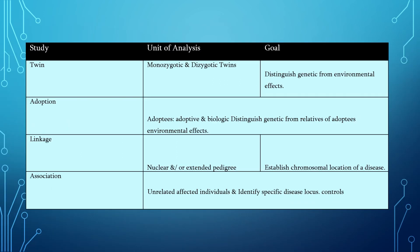To summarize all these studies: in twin study, the unit of analysis is monozygotic and dizygotic twins, with the goal to distinguish genetics from environmental effects. In adoption study, adoptees, adoptive, and biological relatives distinguish genetic from environmental effects. In linkage, nuclear and/or extended pedigree is the unit of analysis with the goal to establish chromosomal location of the disease. In association, unrelated affected individuals and controls are used to identify specific disease loci.